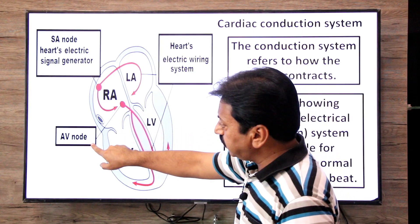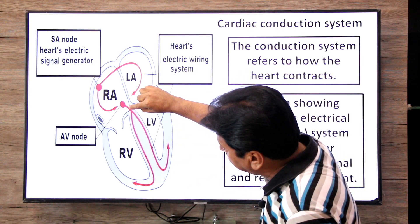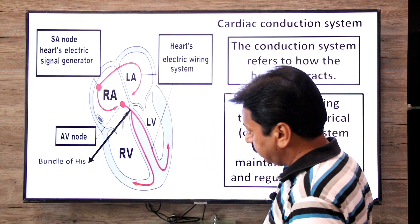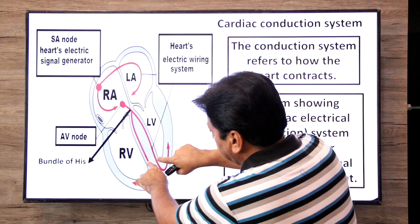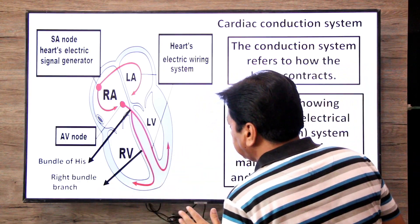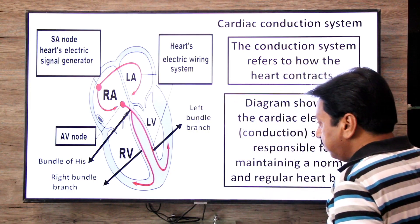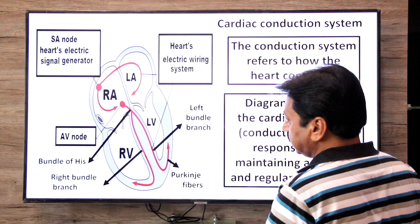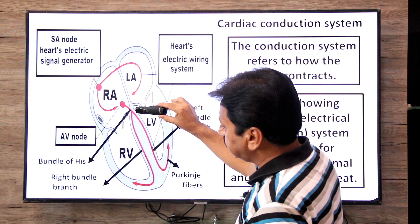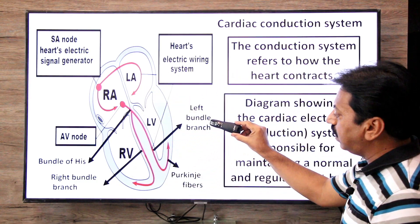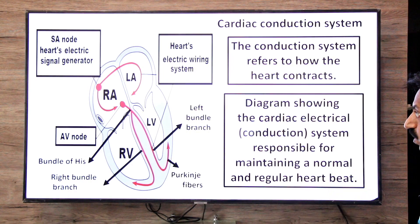The second component is the AV node — the atrioventricular node. From there, the signal travels through an elongated segment called the Bundle of His, which is the third component. The Bundle of His divides into two branches — the right bundle branch and the left bundle branch — which form the fourth component. The fifth component is the Purkinje fibers. Together, these form our cardiac conducting system which maintains the heartbeat.